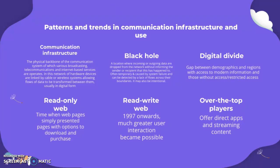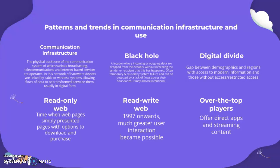Patterns and trends in communication infrastructure and use: communication infrastructure is the physical backbone of the communication system, through which broadcasting and internet-based services operate via hardware devices linked by cable or wireless systems, allowing data to flow in digital form. A 'black hole' is a location where incoming or outgoing data is dropped from the network without informing the sender or recipient — usually temporary, caused by system failure, and detected by a lack of flows across boundaries.